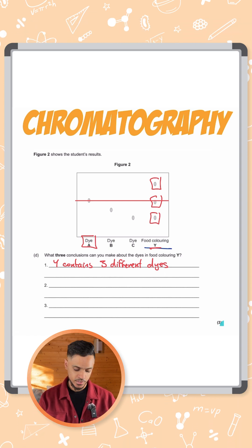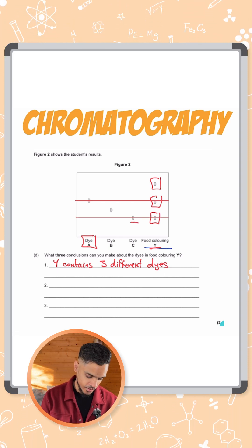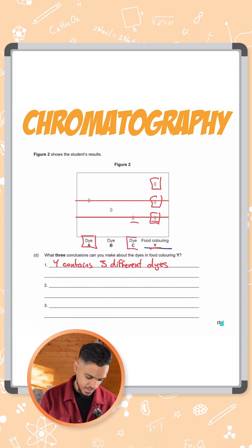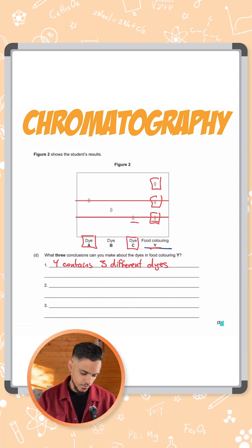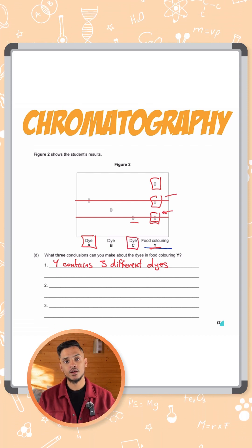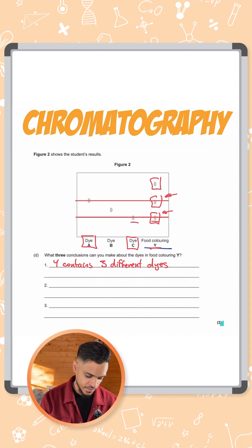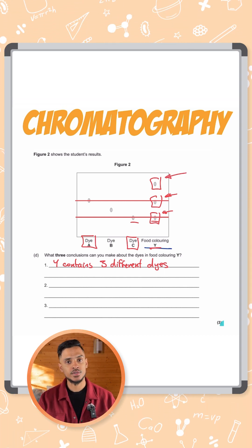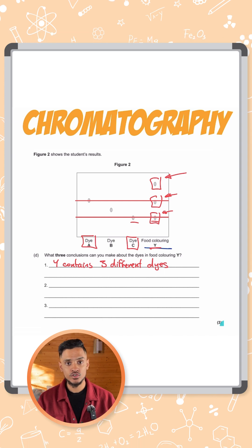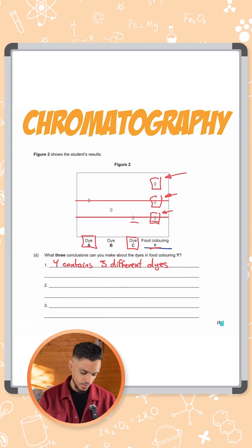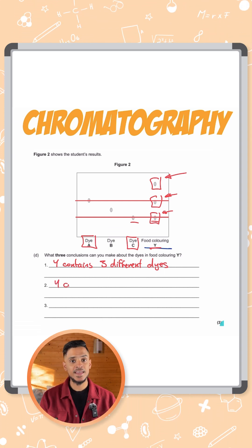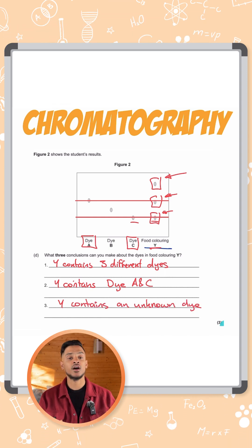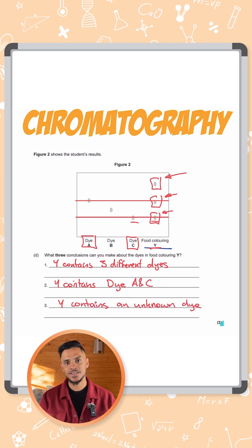Another one that matches is dye C, because both of those are at the same level. So food colouring Y also contains dye C — we've matched two of the dyes in food colouring Y. The only one that hasn't been matched is the top one, so that one is an unknown dye. So for the three marks: Y contains dye A and dye C, and Y also contains an unknown dye. That's how you get three marks here.